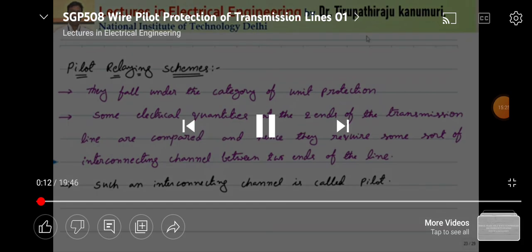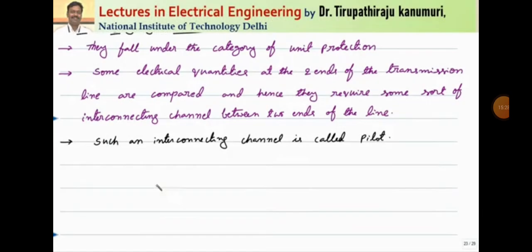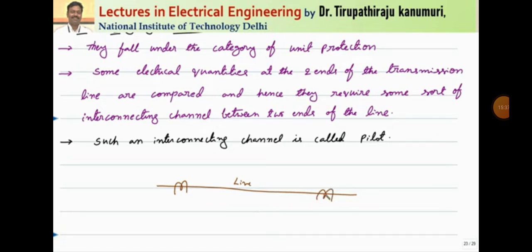In unit protection, if you are taking your transmission line, CTs are connected at both ends. The quantities at these two ends are compared and accordingly a decision is made. Whichever zone you want to protect, the CTs will be placed on both ends of that particular zone. This is the zone of protection, and the comparison of electrical quantities from both ends is used for making decisions.